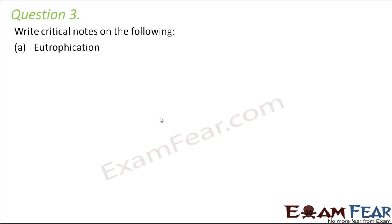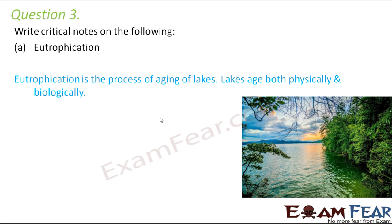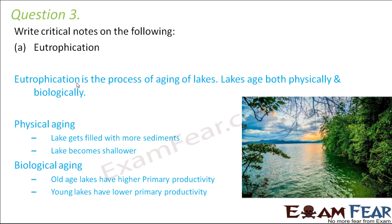Eutrophication is the process of aging of lakes — both physically and biologically. Physical aging takes place when the depth of the lake tends to decrease and sedimentation increases at the bottom, making the lake shallower. Biological aging takes place as the primary productivity of the lake tends to increase. Therefore, older lakes have higher productivity than younger lakes.